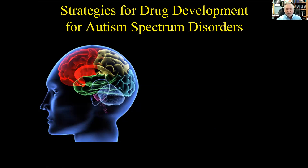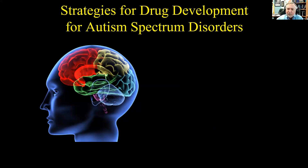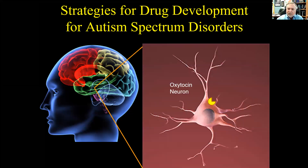One drug that does that is ecstasy, but there are others as well. One we've been using is a melanocortin agonist that causes local release of oxytocin into the PVN, which then primes those PVN neurons so that when another stimulus comes to stimulate oxytocin release, you get a much more robust release of oxytocin — essentially enhancing oxytocin release.